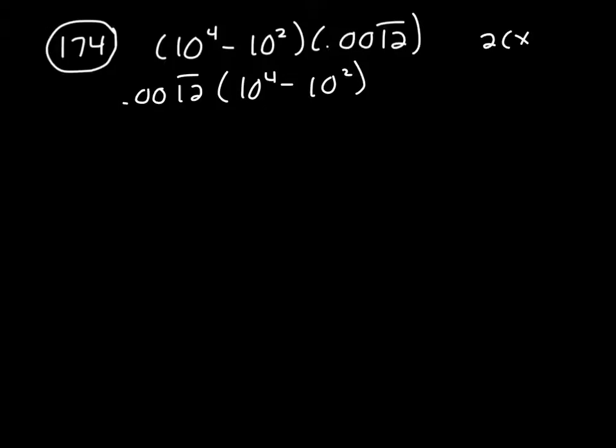Like if we had 2 times x minus 3, that's 2 times x, and then 2 times a negative 3 would give you negative 6. I want to distribute this.